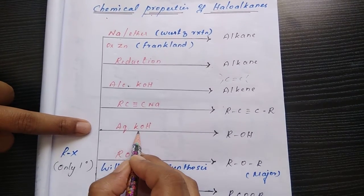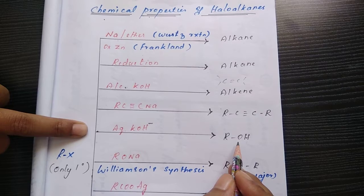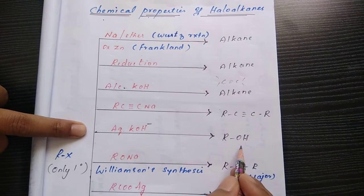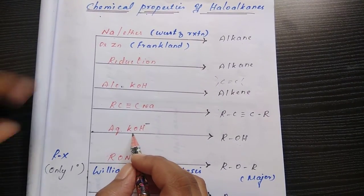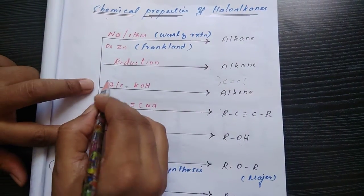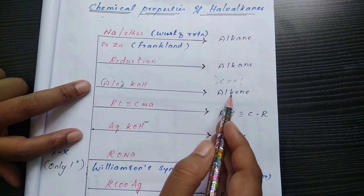Then if you go with aqueous KOH, we get nucleophilic substitution giving alcohol as a product. Here I want to instruct one more point. You just look over. If the alcoholic solvent I am using, the reaction undergoes elimination.